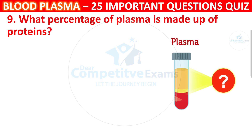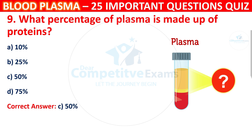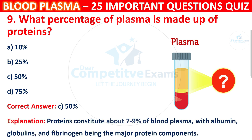Question 9: What percentage of plasma is made up of proteins? Your options are 10%, 25%, 50%, or 75%. The correct answer is C, i.e. 50%. Proteins constitute about 7–9% of Blood Plasma, with Albumin, Globulin, and Fibrinogen being the major protein components.